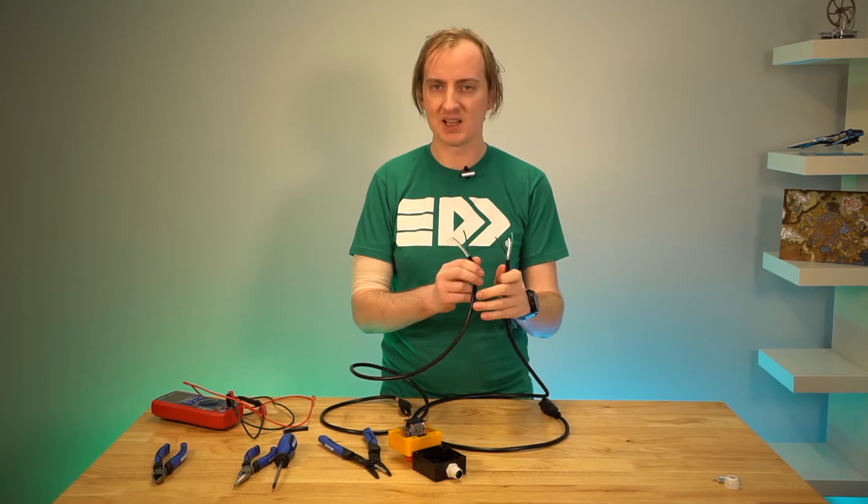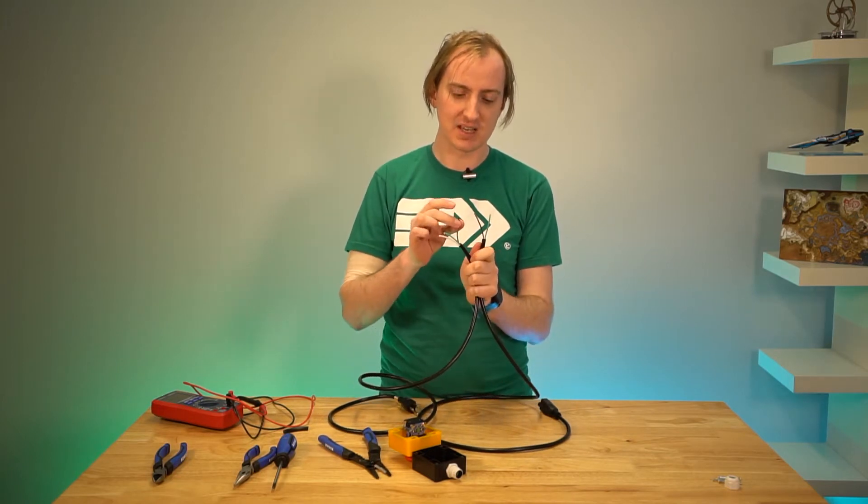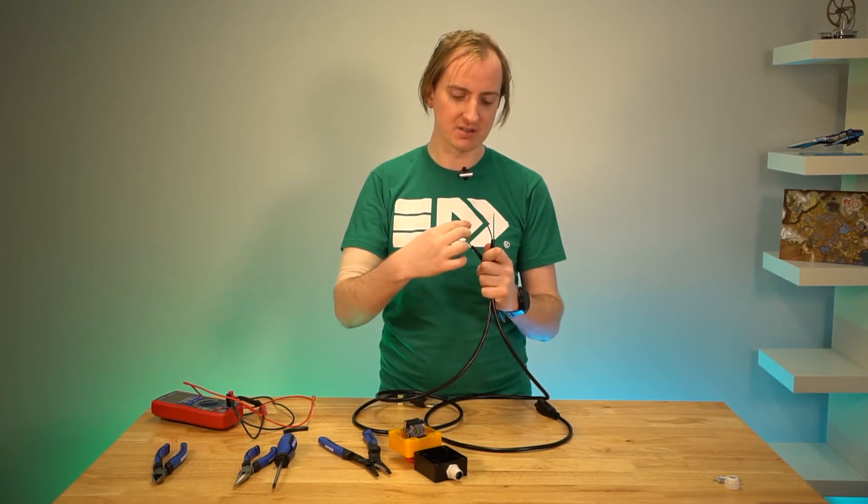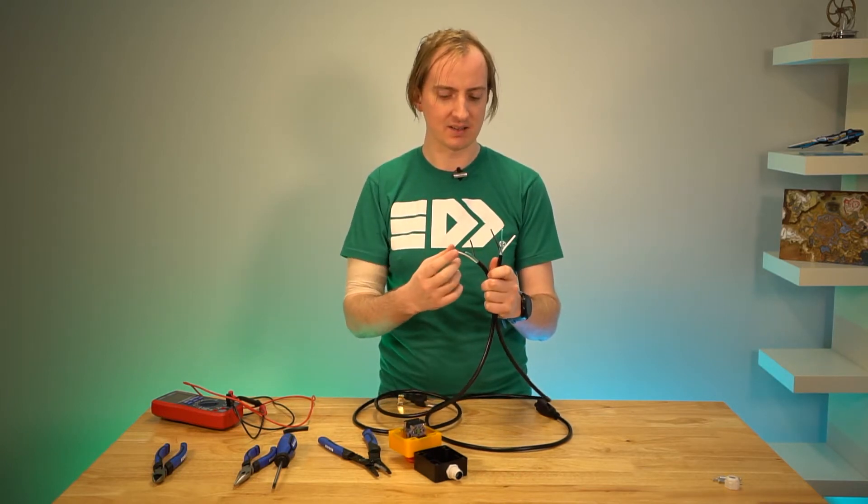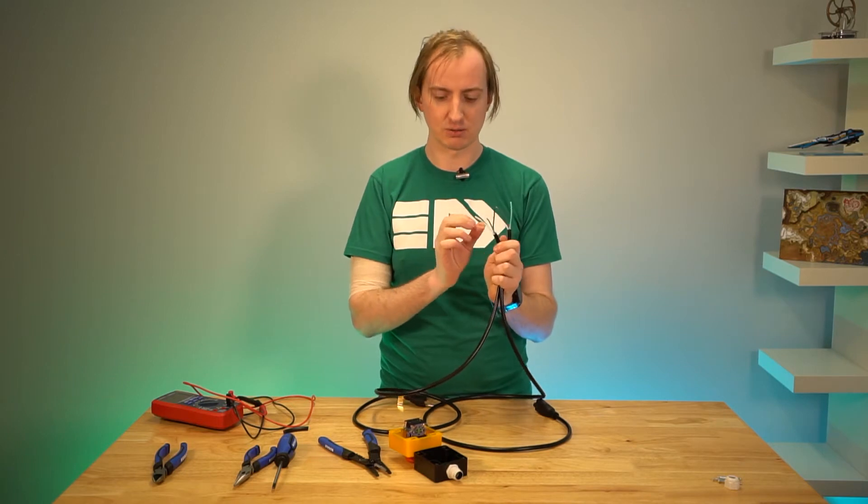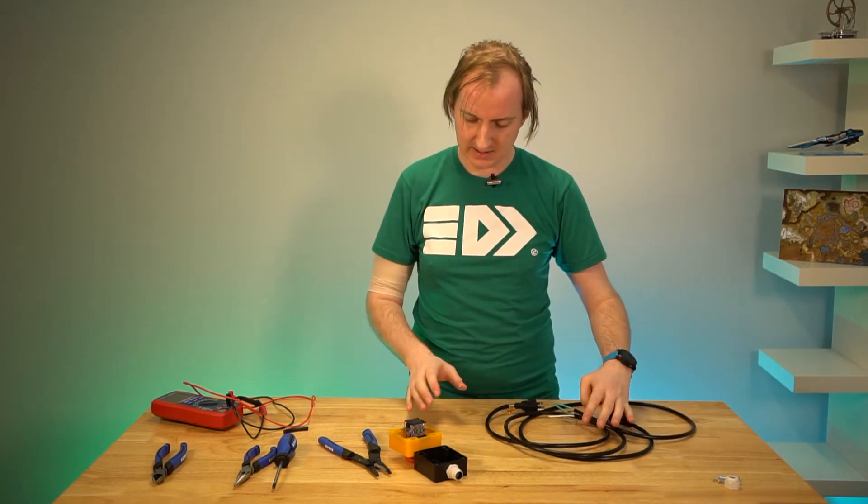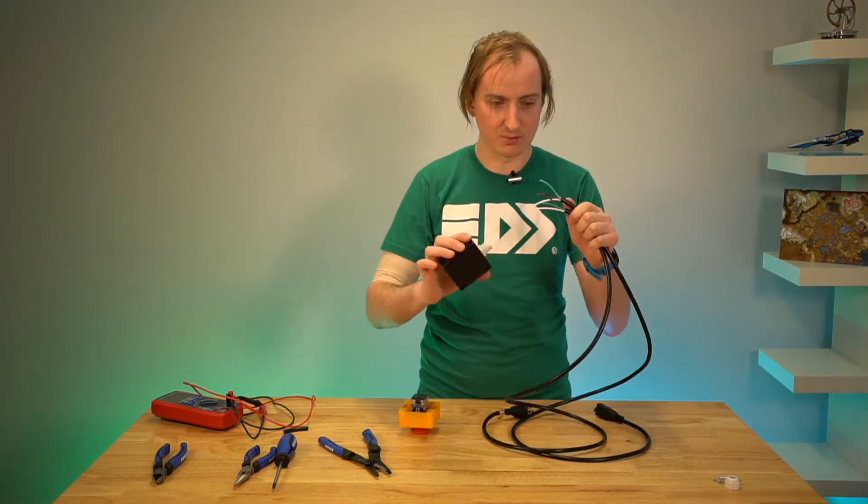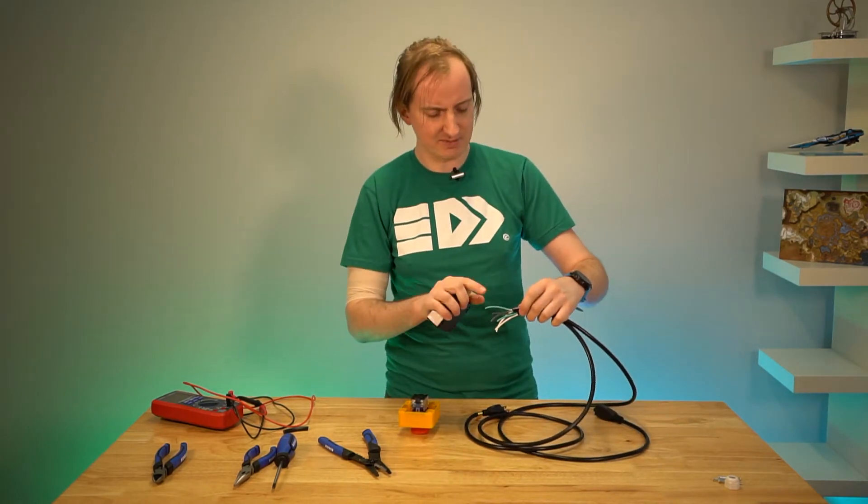And so what I want to do here is we want to specifically have the two lives, these black wires, be the ones that run through our switch, and then we'll just bond the ground here together, and we'll bond the neutral here together. So let's pull the switch over. And the first thing to do is to get both of these wires into this grommet.